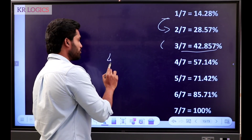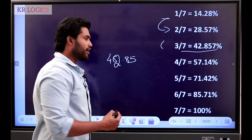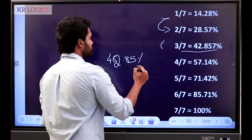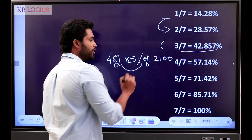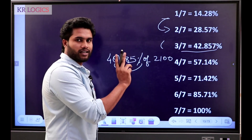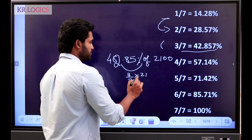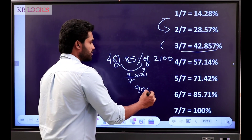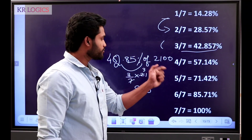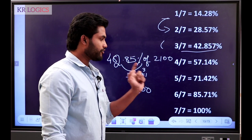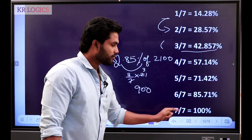Let's take a look at the example: 42.85% of the work completed. This value — solve it in 3 seconds: 1, 2, 3. The answer is 3. So the answer is 900. 9 means 9 times 900. 4 by 7 is 57.14. 5 by 7 is 71.42. 6 by 7 is 85.71. 7 by 7 is 100%.